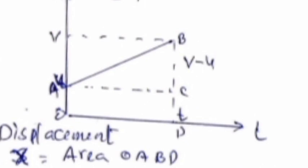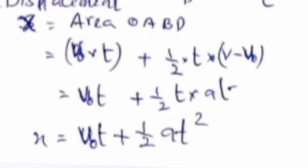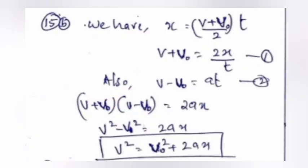Or write this: x equals area OABD equals v₀ into t plus half t into (v minus v₀) equals v₀t plus half t into at. x equals v₀t plus half at².